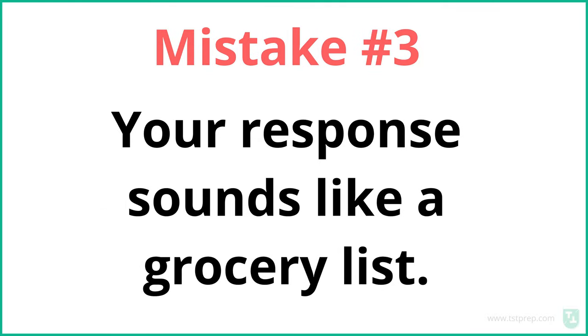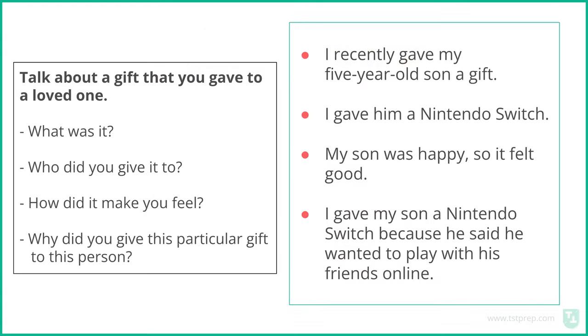Let's go to mistake number three. This is a big one I see a lot of students make: your response sounds like a grocery list. What does that mean? It means it doesn't sound like a story — it doesn't sound like a response where you develop the topic. For example, for a question like 'talk about a gift you gave to a loved one,' if you just answer like 'I gave my son a Nintendo Switch. My son was happy. I gave him the Switch because he wanted to play with his friends online' — that's just listing out answers. You need to tell a story. You want a beginning, a middle, and an end, so you develop the topic and show a wide range of vocabulary and grammar.